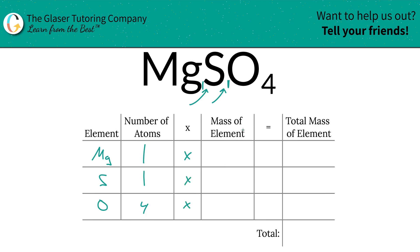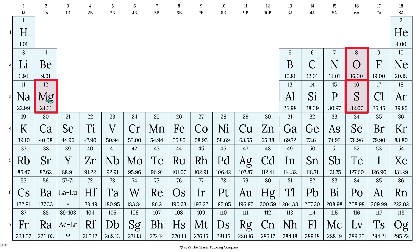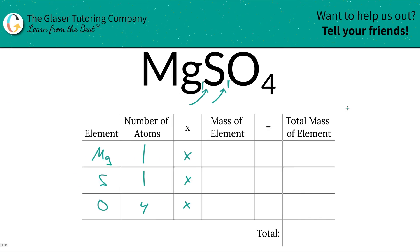Then you're going to take those number of atoms and multiply it by the mass of each element. These masses are always found on the periodic table, so let's take a look. Magnesium is 24.31, oxygen is 16, and sulfur is 32.07. So that's what we're going to be plugging in. So we've got 24.31, sulfur was 32.07, and then oxygen was 16.